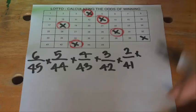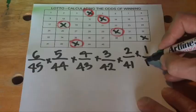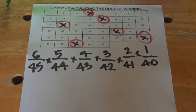When the last ball drops, you've got one chance left out of 40 balls remaining in the drum of that last number being one of our selected numbers.